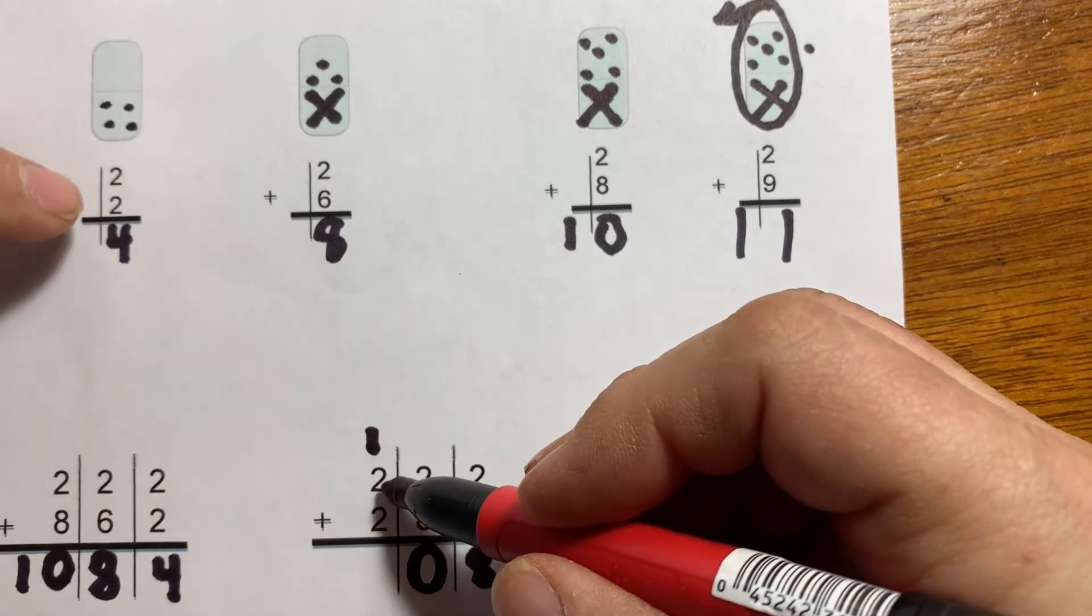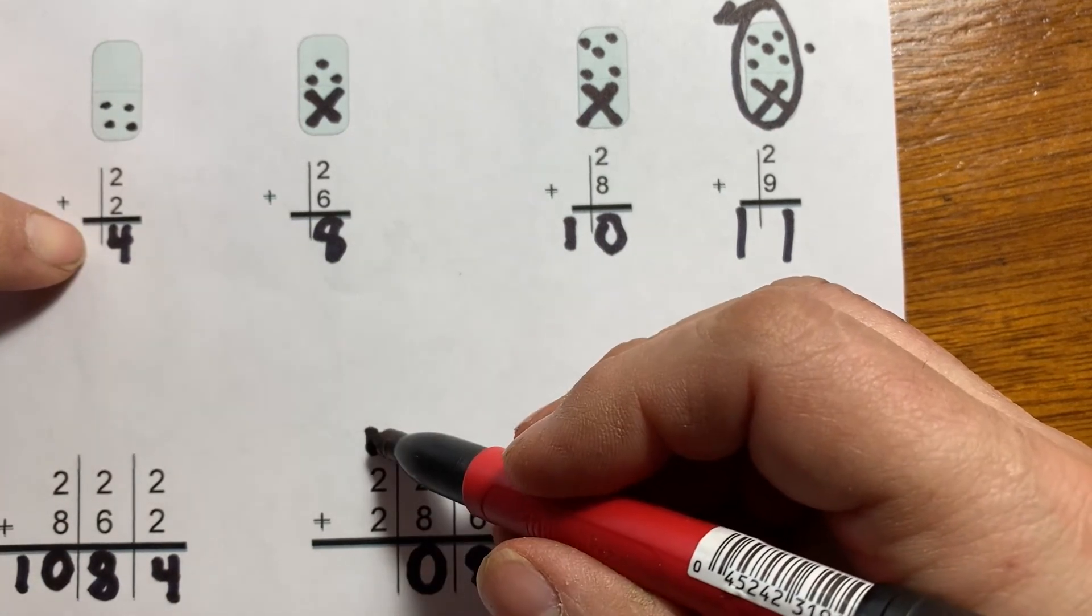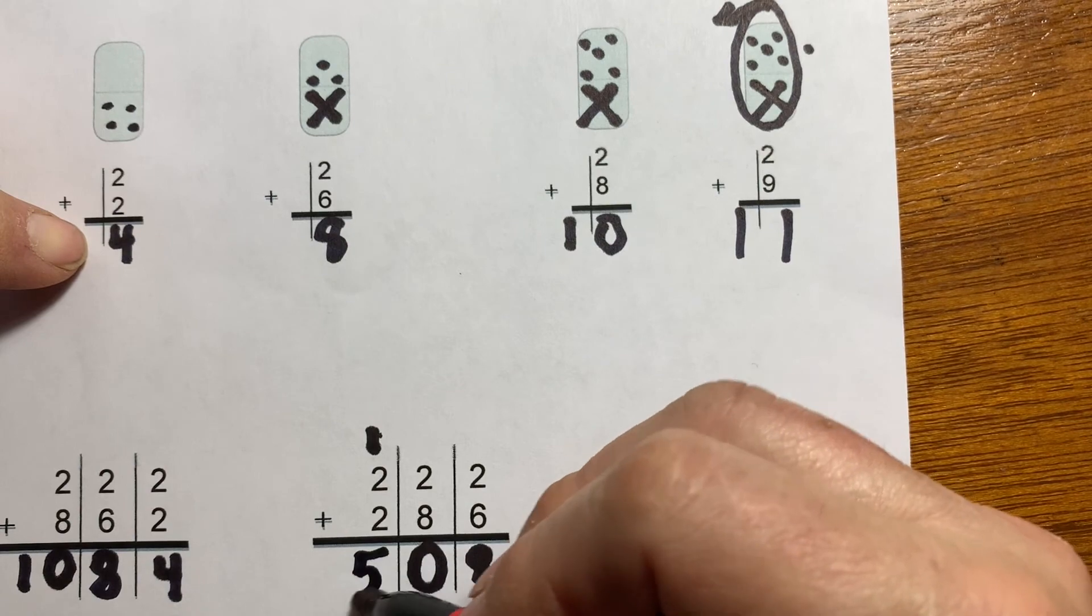Now, two plus two, I know is four. If I add this one additional one, five.